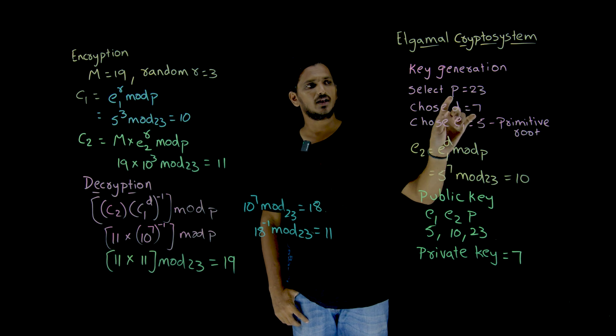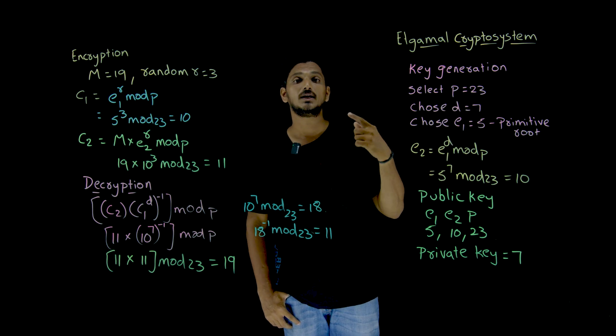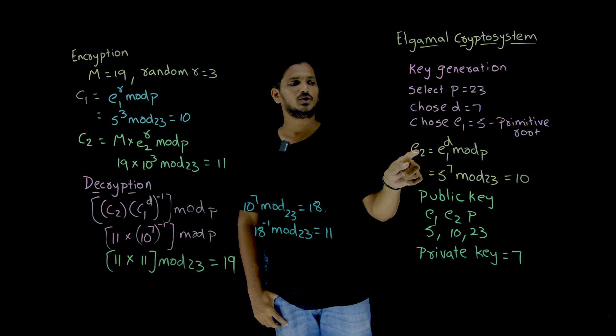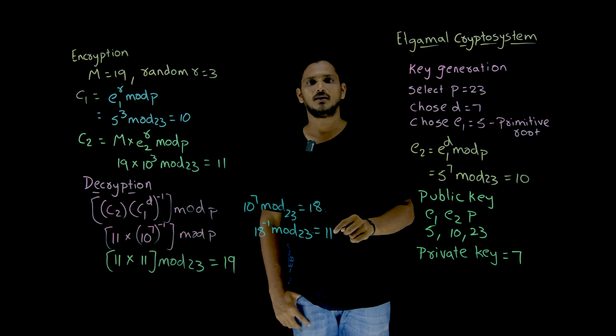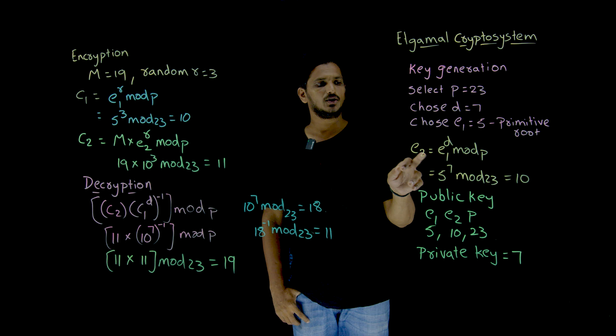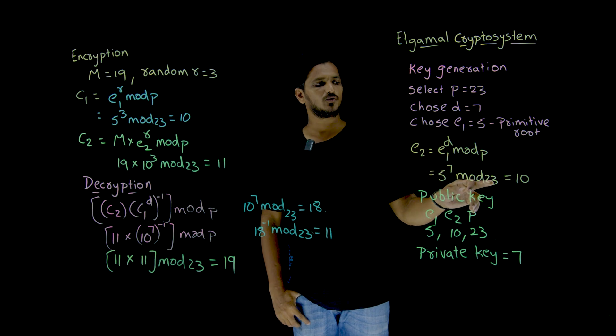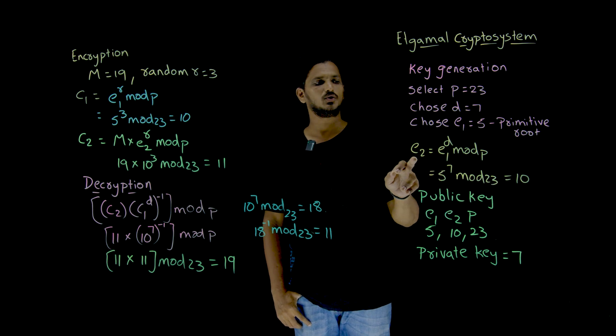So using these 3 values, we are having P, D and E1 value. We have to generate E2 value. E2 equal to E1 power D mod P. So E2 is 5 power 7 mod 23 which is 10. So E2 value is 10.